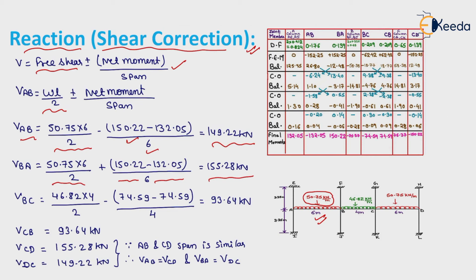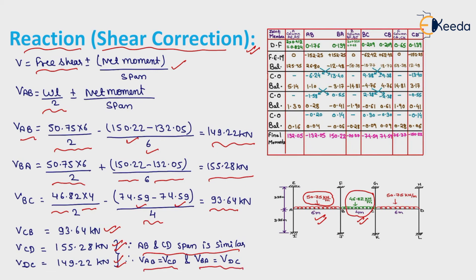V of BC = 46.82 × 4/2 − (74.59 − 74.59)/4 = 93.64 kN. V of CB = 93.64 kN. V of CD = 155.28 kN. V of DC = 149.22 kN. Since AB and CD spans are similar, V of AB = V of CD and V of BA = V of DC.